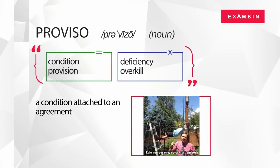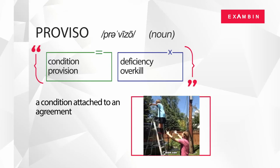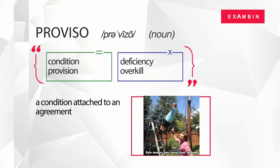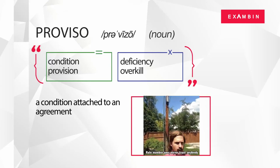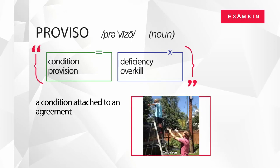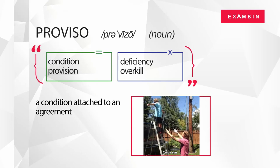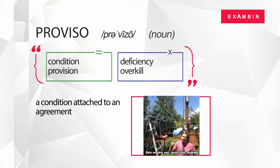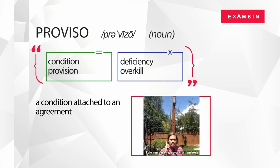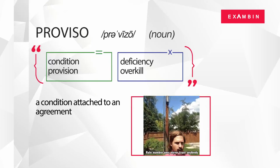The word proviso is a noun. The direct synonyms of proviso are condition and provision. In general context, the word proviso means a condition attached to an agreement. Deficiency and overkill are some of the terms referring to the opposite meaning of proviso.